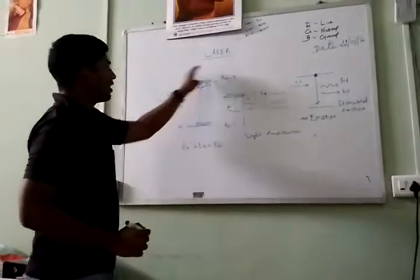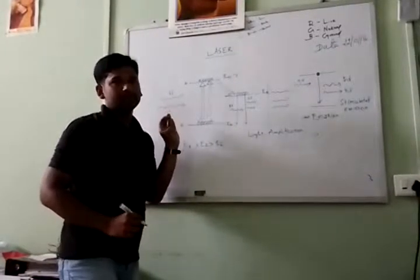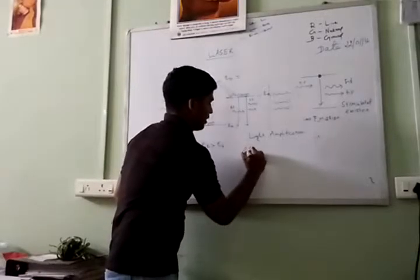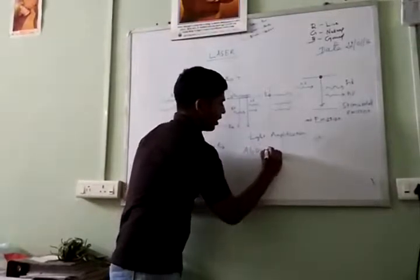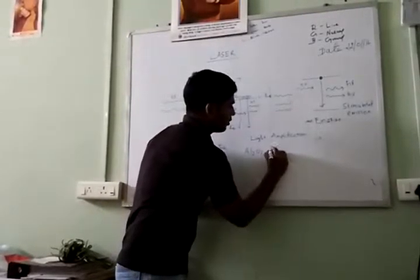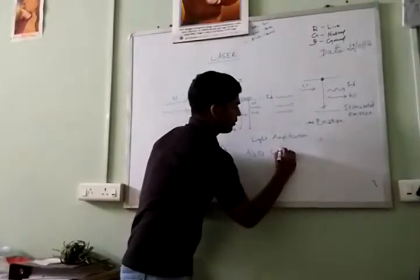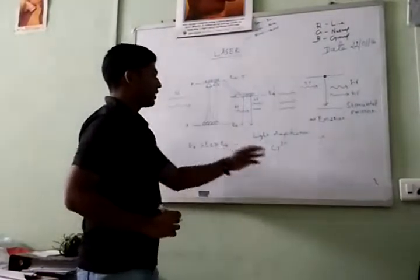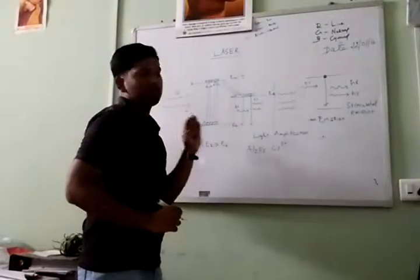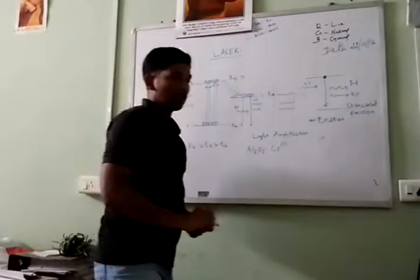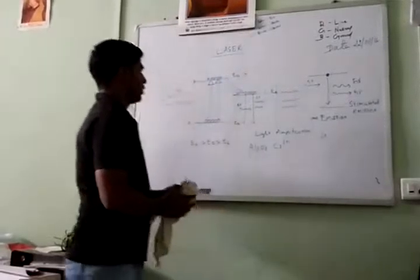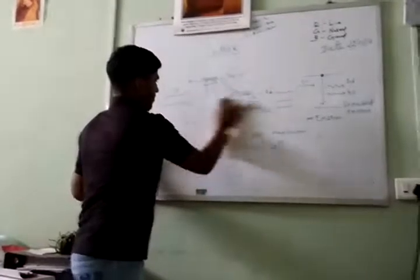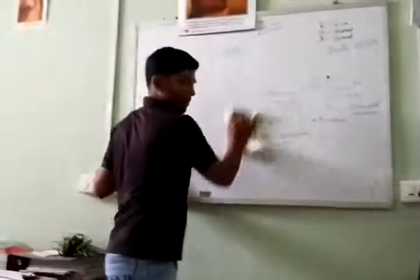This three-level system represents the Ruby laser — alumina doped with chromium ions — indicating the three-level energy system. Now I am going to explain the Ruby laser.